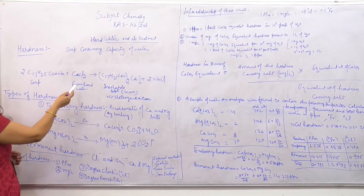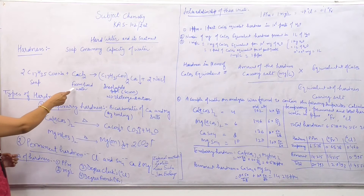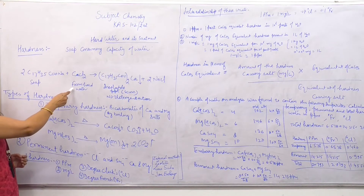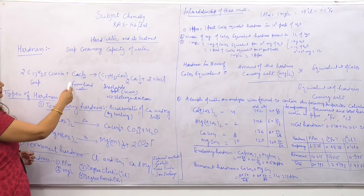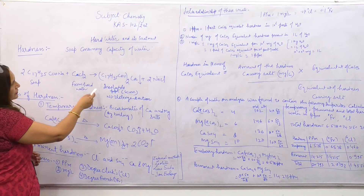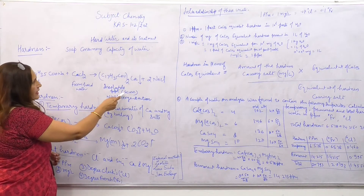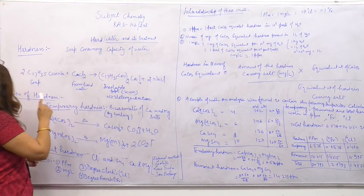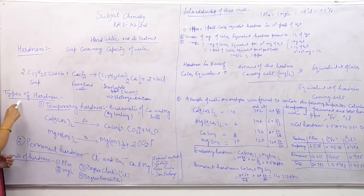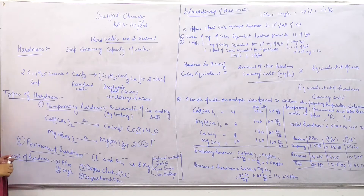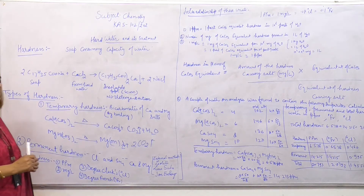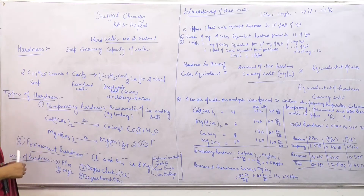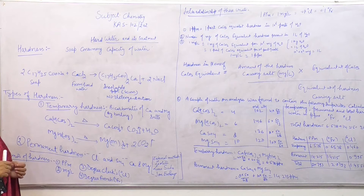Similarly, magnesium chloride also gives a magnesium stearate precipitate. Types of hardness: here we have two types of hardness. One is temporary hardness and the other is permanent hardness.